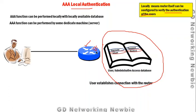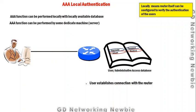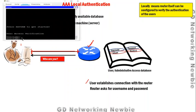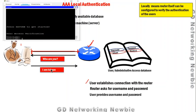In local authentication, the user first establishes a connection with the router to send a request to access the IOS. Establishing the connection does not mean they have accessed the IOS yet — it just sends the request. As soon as the connection is established, the router will ask the user who they are, requiring a username and password.